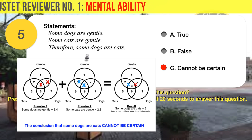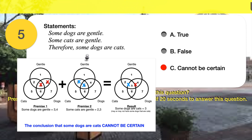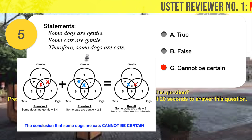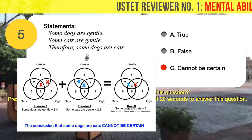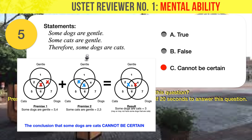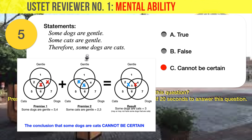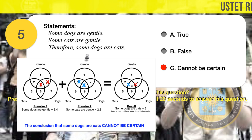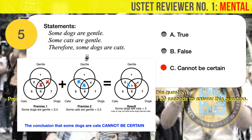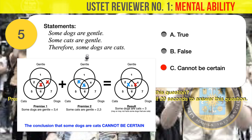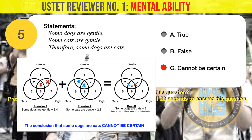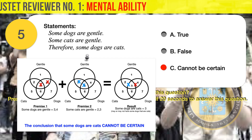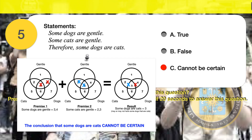The given statements and their relationships can be represented in a Venn diagram as shown. You may press the pause button and take time to study the Venn diagram. Based on the Venn diagram shown, the conclusion that some dogs are cats cannot be certain. Take note that many logical reasoning problems, particularly syllogisms, are answered with the help of Venn diagrams. Using Venn diagrams can be the easiest, fastest, and most consistent way to solve syllogisms, so it is highly recommended that you learn how to use them. Check out the suggested link in the description for a video tutorial on using Venn diagrams to solve logical reasoning problems.